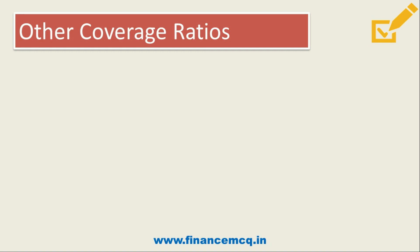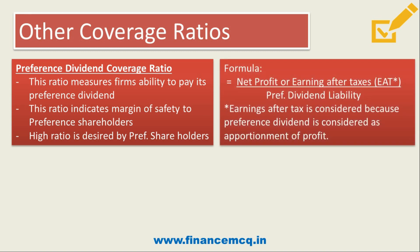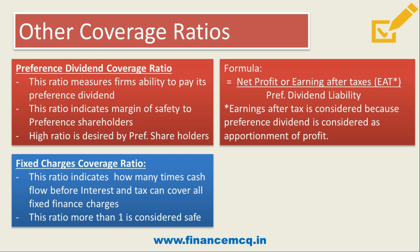The Preference Dividend Coverage Ratio measures a firm's ability to pay its preference dividend and indicates the margin of safety to preference shareholders. A higher ratio is desired by preference shareholders so their dividend is safe. The formula is Net Profit (Earnings After Tax) divided by Preference Dividend Liability. Earnings after tax is used because preference dividend is an appropriation of profit, whereas interest is a charge against profit.